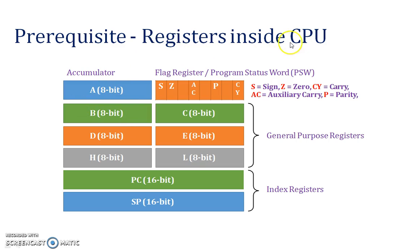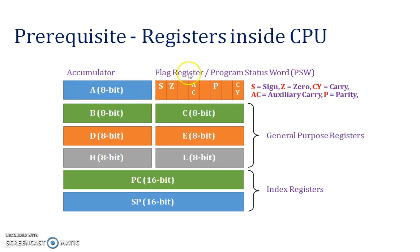Inside the CPU, these all are registers: A, B, C, D, E, H, L. These all are 8-bit registers, so B, C, D, E, H, L are general-purpose registers. A is the accumulator. There is also a flag register — it stores one bit at a time, storing flag values. The index registers are two: PC (program counter) and stack pointer. Program counter stores the next instruction address.